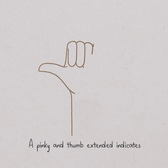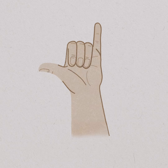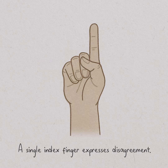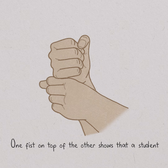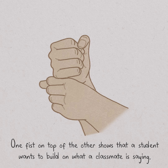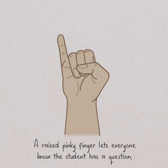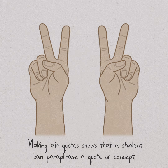A pinky and thumb extended indicates agreement with the speaker. A single index finger expresses disagreement. One fist on top of the other shows that a student wants to build on what a classmate is saying. A raised pinky finger lets everyone know the student has a question. Making air quotes shows that a student can paraphrase a quote or concept.